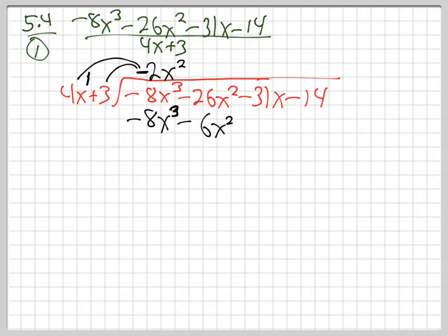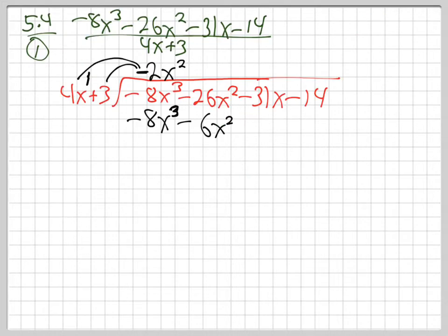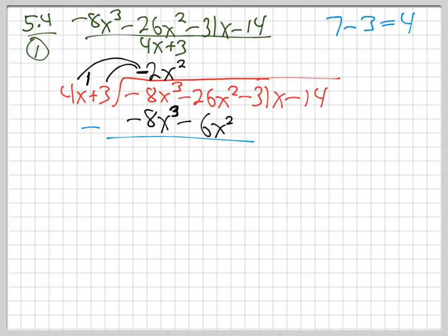Now we subtract. The easiest way to subtract is to add the opposite. Like 7 minus 3 is the same as 7 plus negative 3. Because it's hard to think of subtracting a negative. So instead of subtracting, we let that minus sign distribute into the parentheses and change both signs. That minus sign distributes through the whole bottom line — boom, boom — making both terms positive.